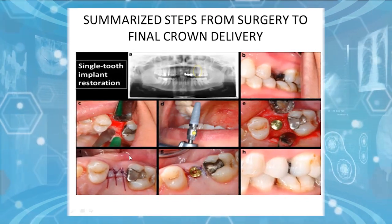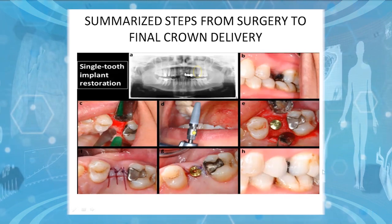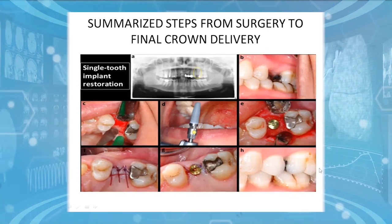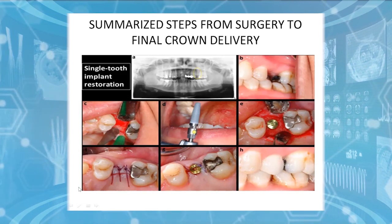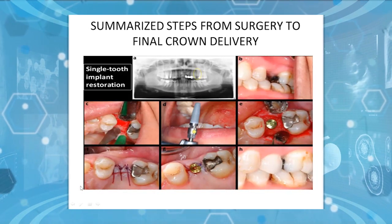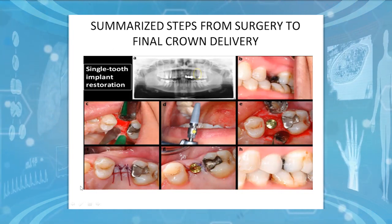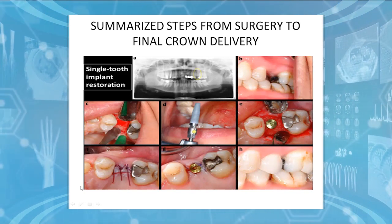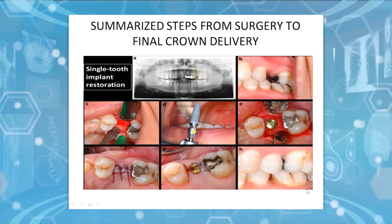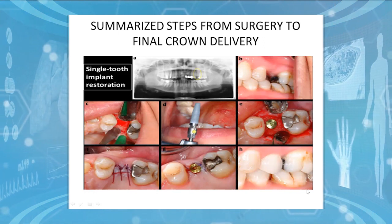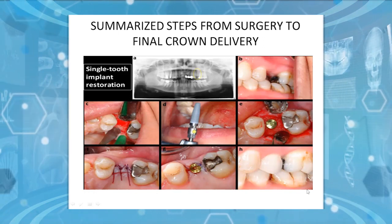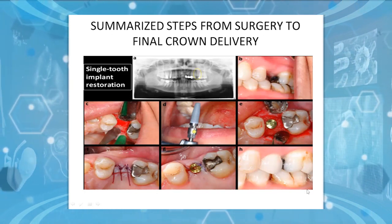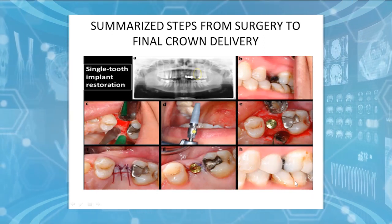For single-tooth implant restoration: this patient was missing a maxillary left first molar, as seen on the OPG x-ray. Image B shows the empty space where the tooth is missing. We then exposed the soft tissue, placed the implant — you can see the small healing abutment — placed sutures to cover the wound and implant, and delivered the final crown.